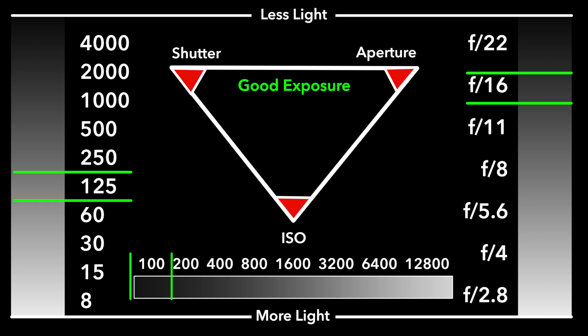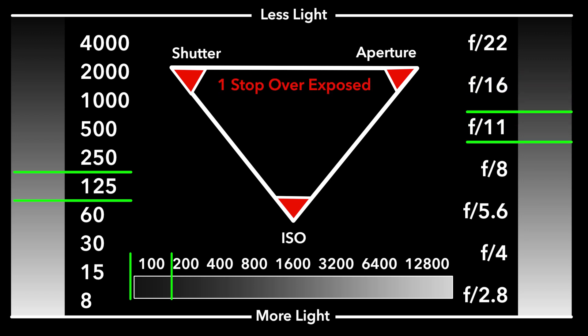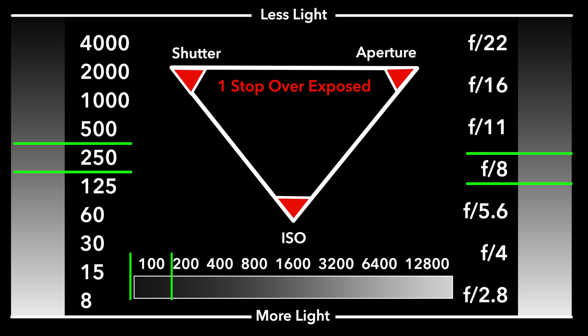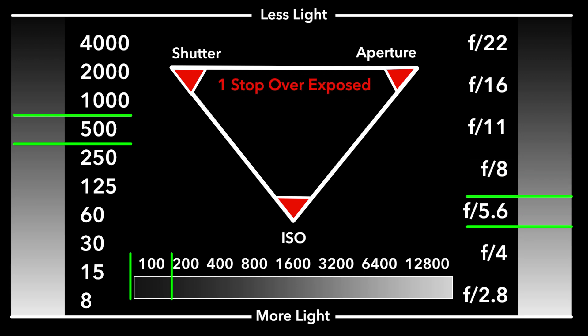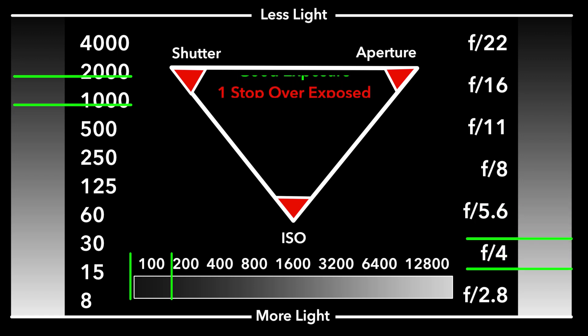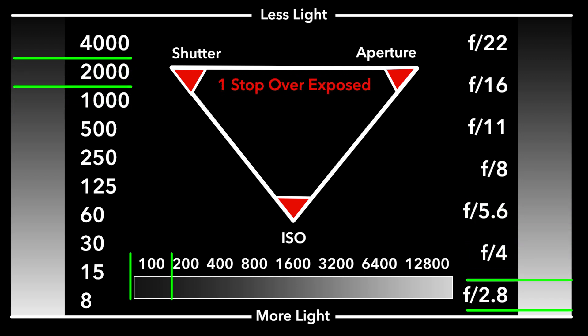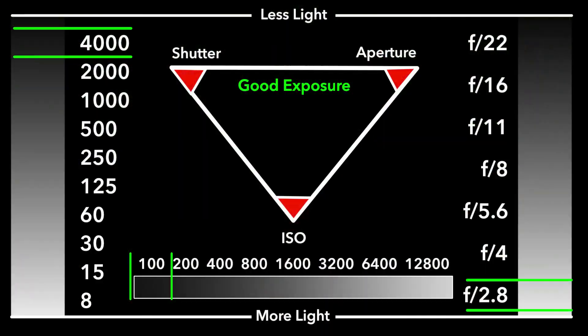If I change my aperture to f11, I'm now letting in one stop more light and things are out of balance — I'll be overexposed. So I need to change my shutter speed to 250. That's one stop, and now things are in balance again. I'll go to f8 — things are out of balance — so I'll go to a shutter speed of 500. Every time I move the aperture by one stop, I move the shutter by one stop: f5.6 to 1000, f4 to 2000, finally f2.8 to 4000. Every time one thing moves by one stop, something else has to move by a stop to keep the exposure set perfectly.